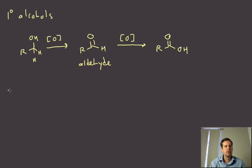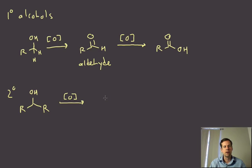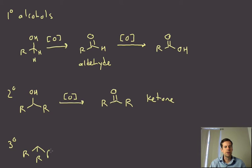Secondary alcohols can only undergo one oxidation, because there's only that one hydrogen on the carbon bearing the hydroxyl. So secondary alcohols undergo one oxidation to give a ketone — a carbonyl with two different organic substituents.